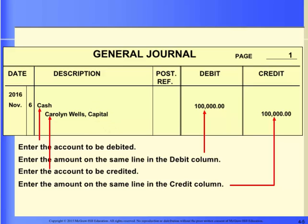Take a look at a journal entry. Carolyn Wells, owner, invested $100,000 cash into the business on November 6. Let's look at each part of the journal entry. First, you should enter the year and the date of the transaction. Then enter the name of the account debited, flush against the line.